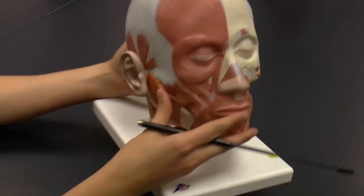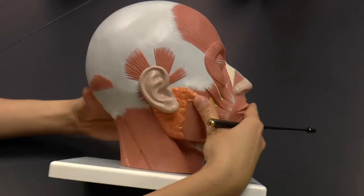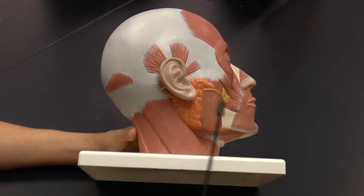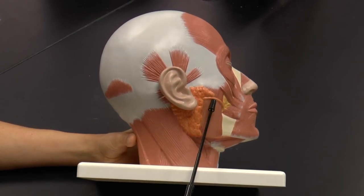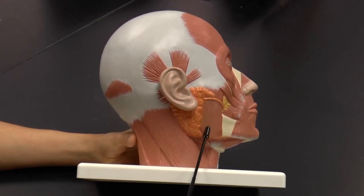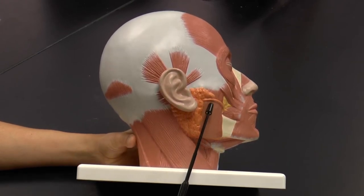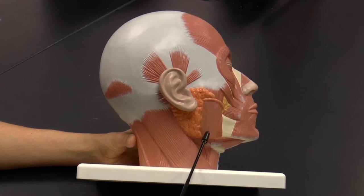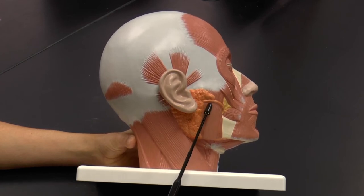If I turn it to a lateral view, you can see a muscle going down the side of the mandible. This is called the masseter muscle — the major muscle for chewing.